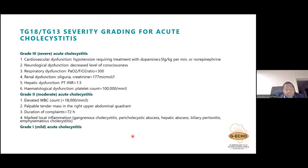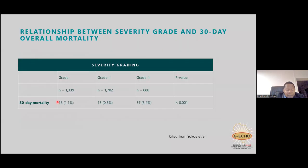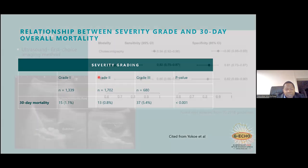Grading severity in cholecystitis follows similar criteria to cholangitis — grade one (mild), grade two (moderate), and grade three (severe). The significance of grading is illustrated by mortality data from Yokoe et al.: 30-day mortality was 5.4% for grade three, compared to 1.1% and 0.8% for grade one — a statistically significant difference — reinforcing the importance of grading in predicting mortality.